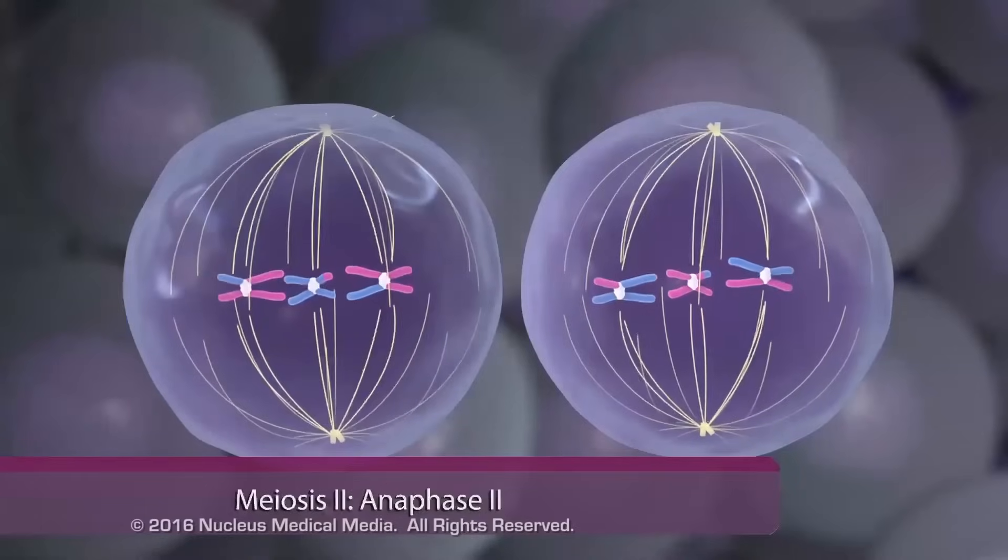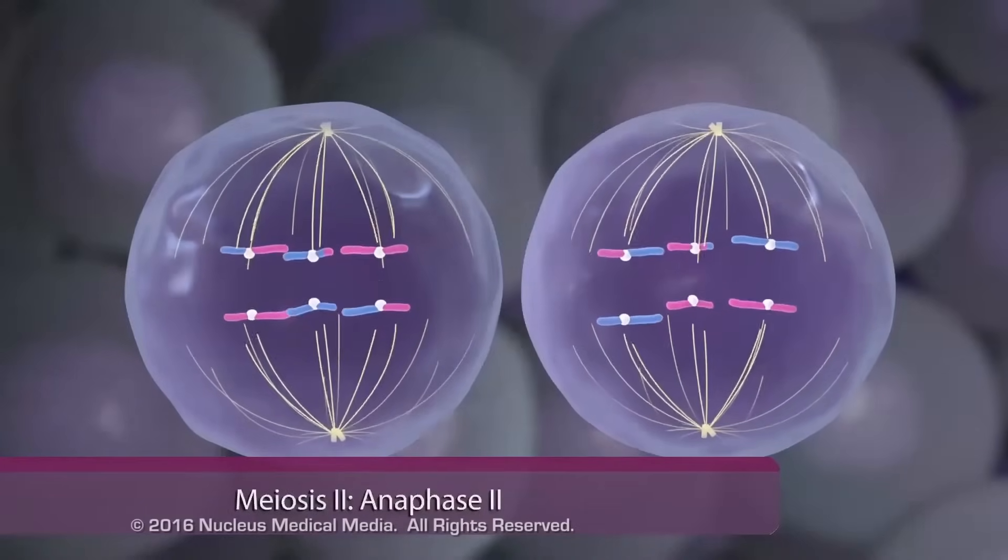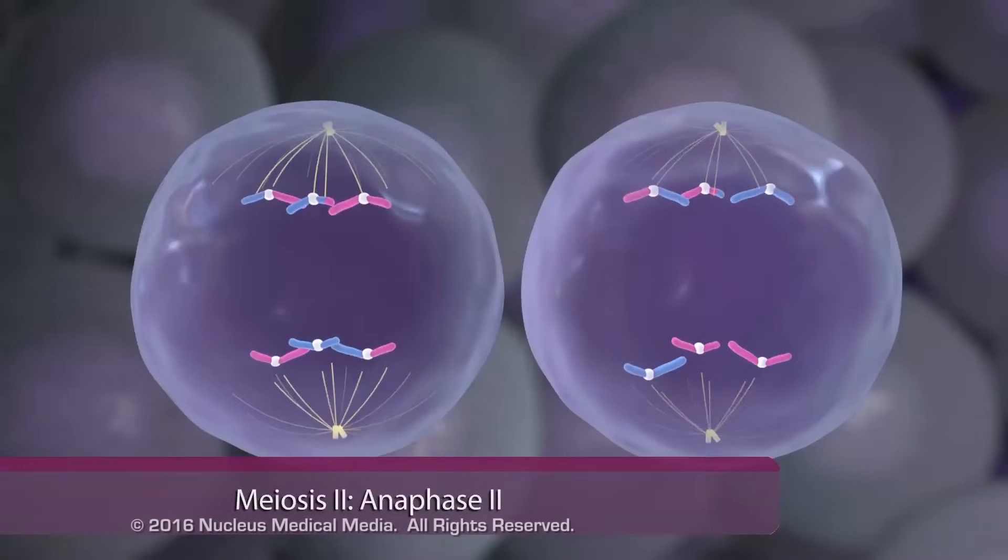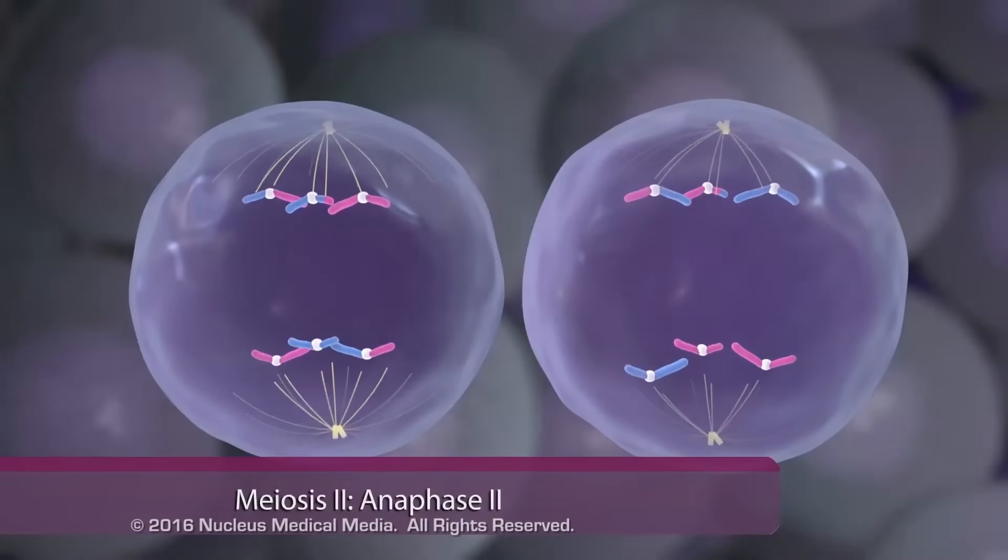During anaphase II, each chromosome is pulled apart into two sister chromatids, each now considered a single-stranded chromosome.